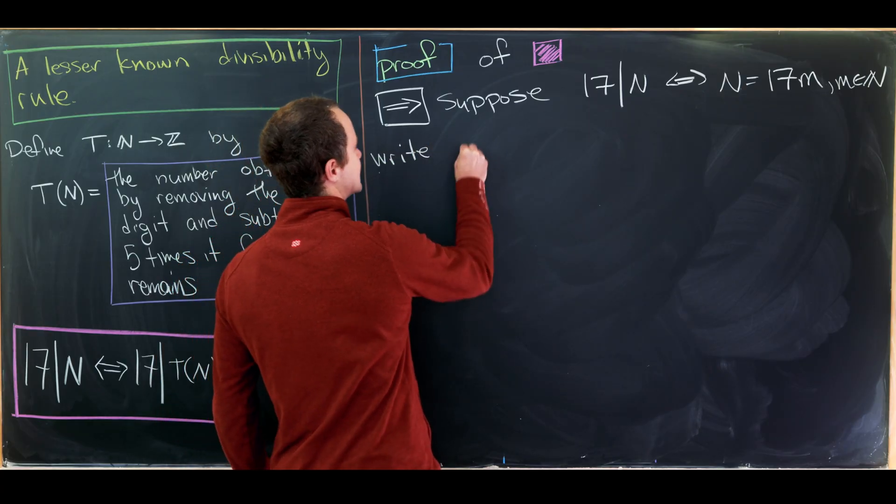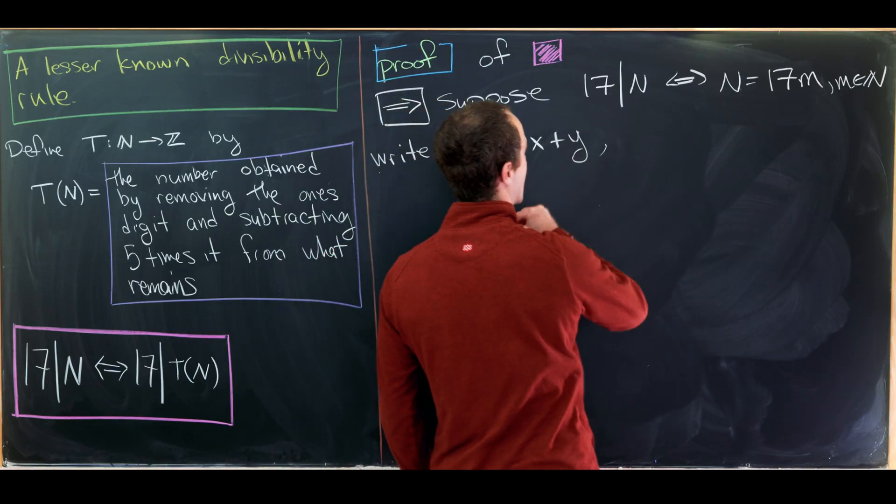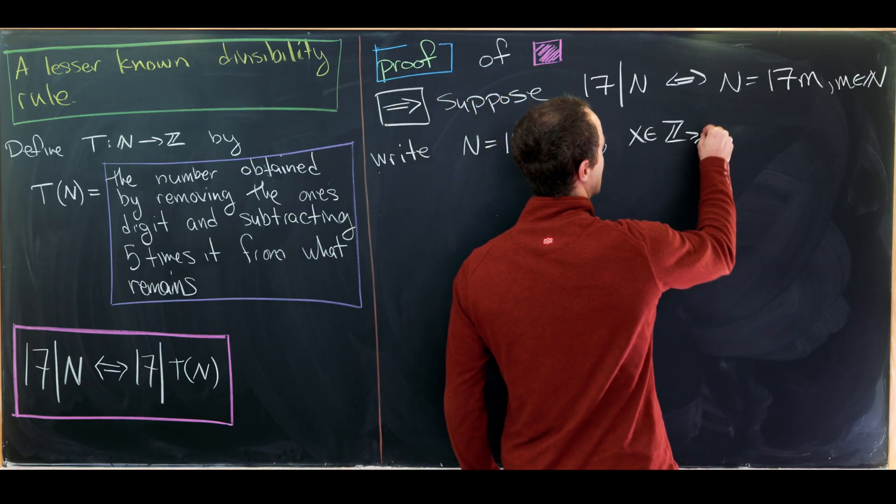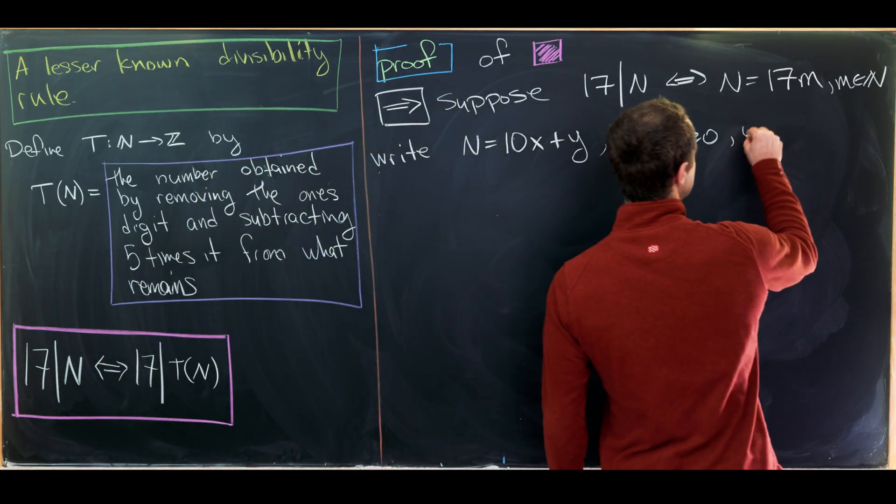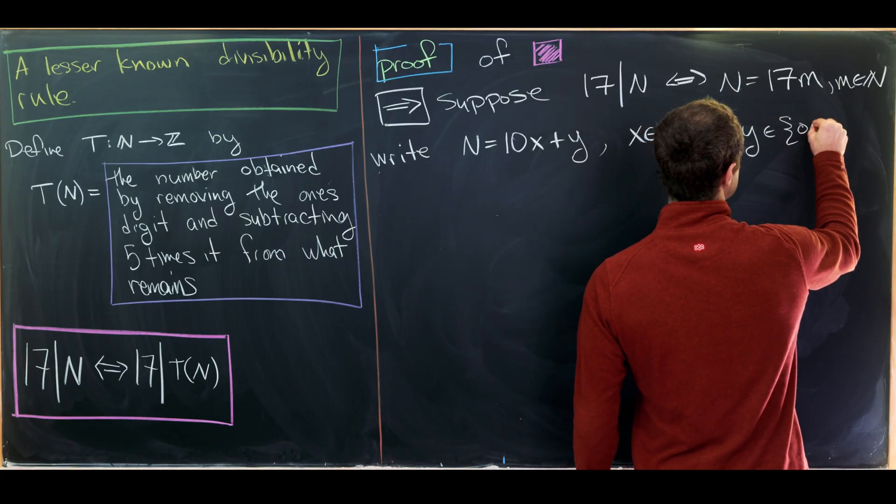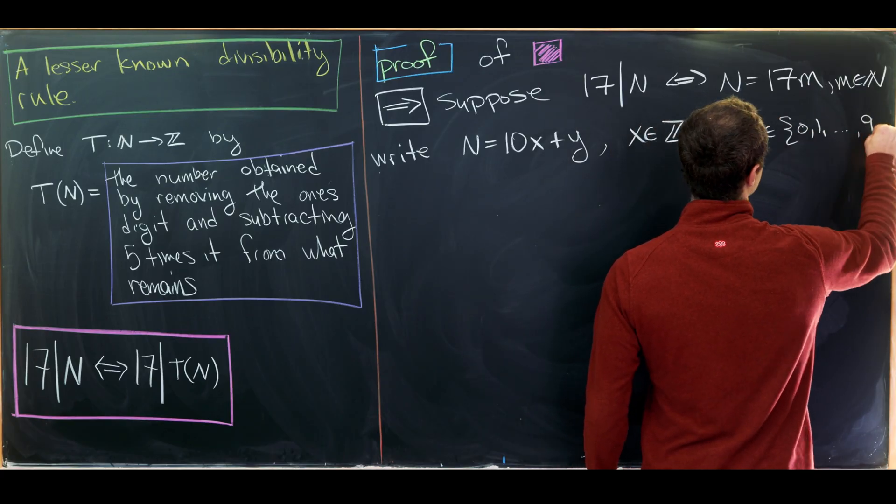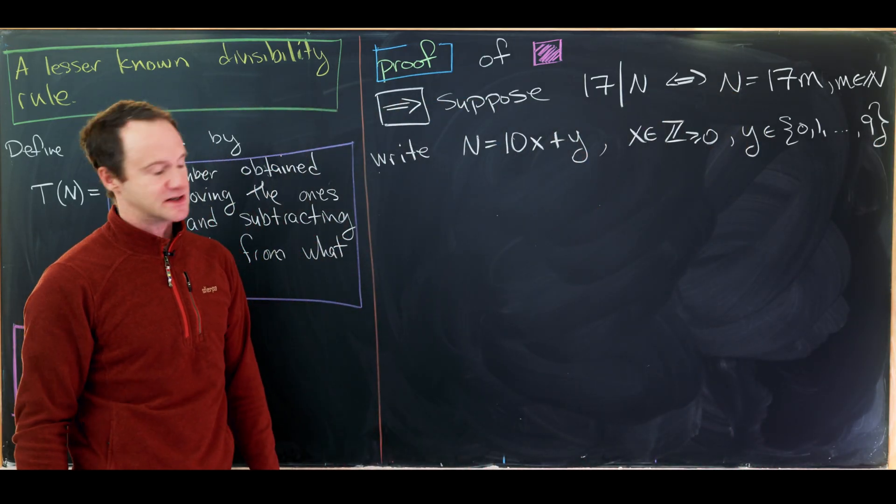We will write n as 10 times x plus y, where x is some sort of non-negative integer. And then y is just playing the role of the ones digit. So that means it comes from the set 0, 1 up to 9. Great. So now it's pretty clear that y is playing the role of the ones digit.